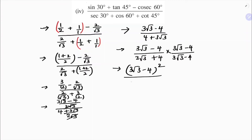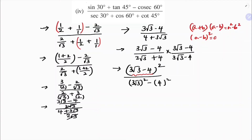Now the expression is (3√3 - 4) divided by (3√3 + 4), which is in the form (a - b)/(a + b). I'll multiply numerator and denominator — the numerator becomes (3√3 - 4)² which is a minus b whole square, and the denominator becomes a² minus b² using the identity (a+b)(a-b) = a² - b².